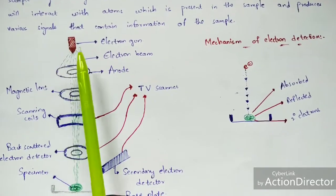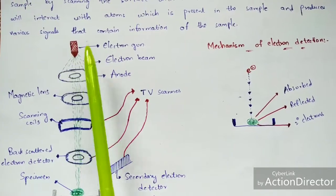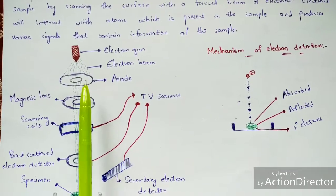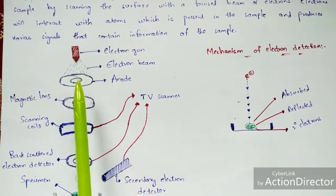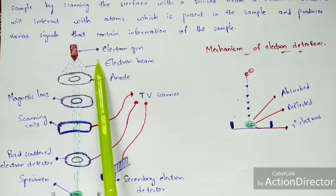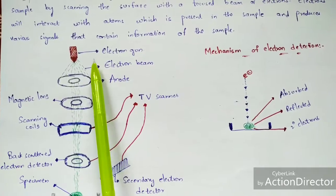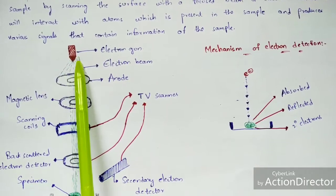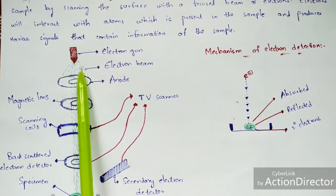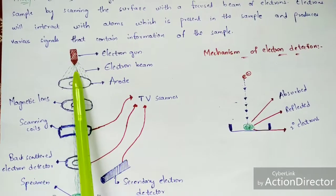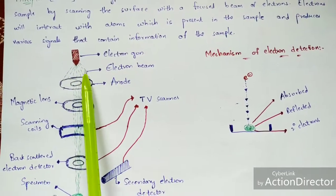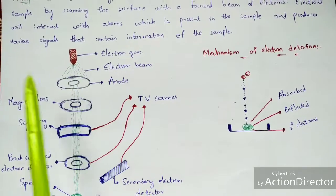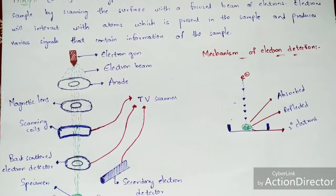So the electron gun plays a major role, because in the name itself — scanning electron microscopy — it indicates the production of electrons. Electrons will be produced by the electron gun. The electron gun releases electrons and those electrons are allowed to fall upon the anode. These resulting structures are nothing but the electron beam.